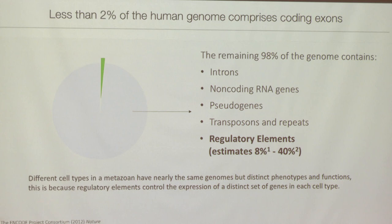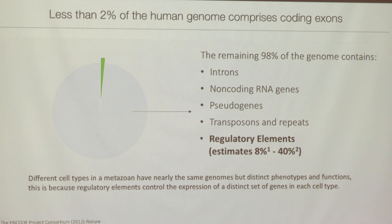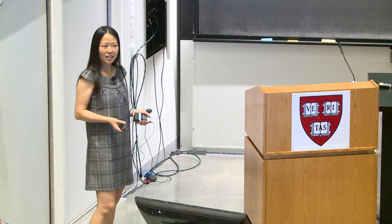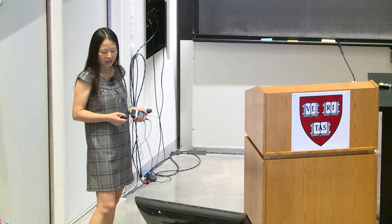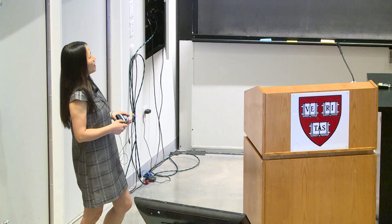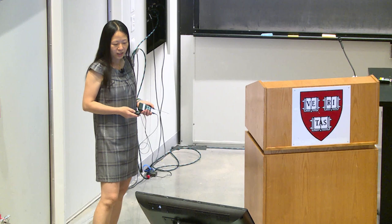It has all kinds of good stuff in it, but the thing I'm going to focus on today is regulatory elements. We really care about regulatory elements in addition to coding exons because all the different cell types in the human body have pretty much the same genome but obviously different phenotypes and functions. The regulatory elements in our genome control the expression of a distinct set of genes in each cell type, which conveys the phenotype and the function.